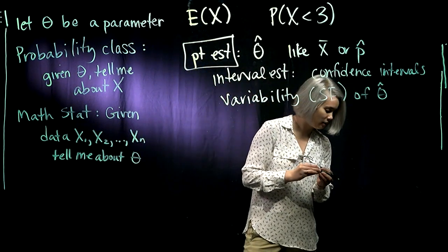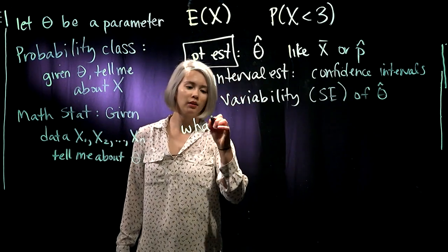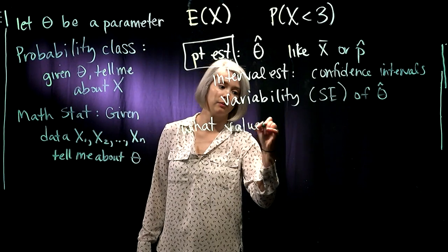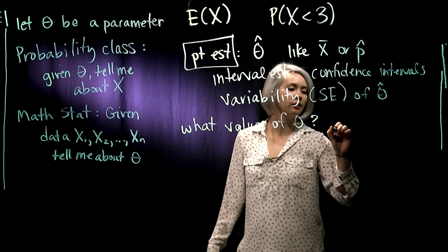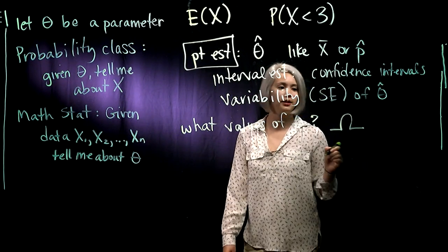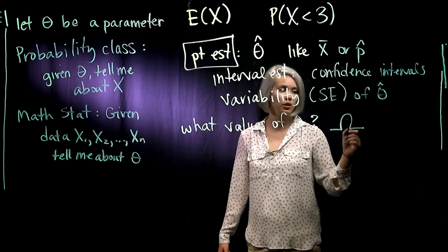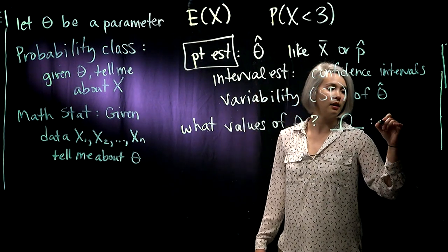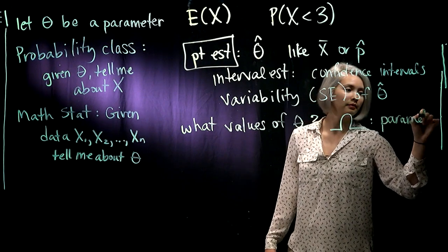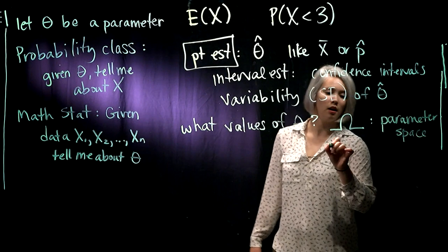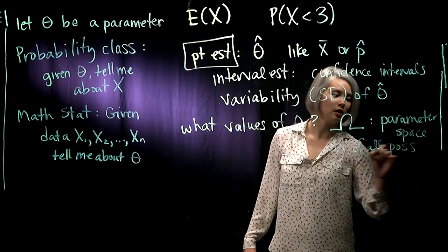Some things we should probably think about before beginning our point estimation: we need to know what values of θ are fair game. What values can θ take on? We usually call this capital Ω. This is the parameter space, the set of all possible parameter values.